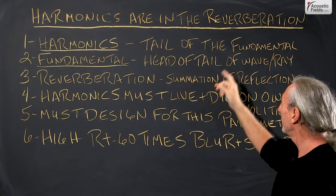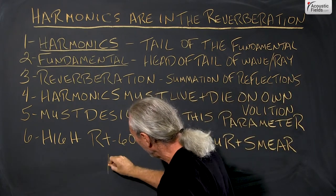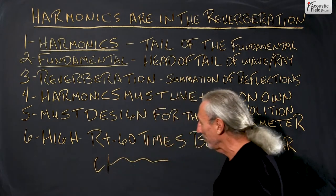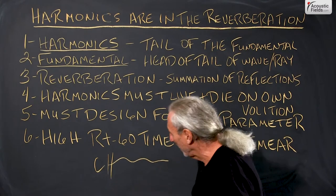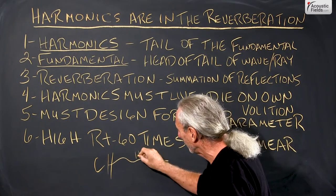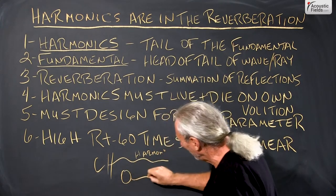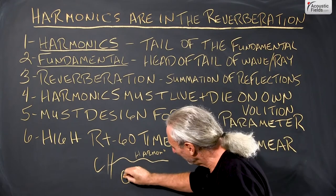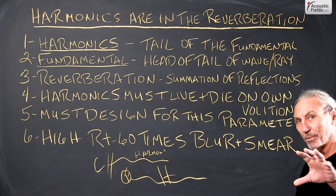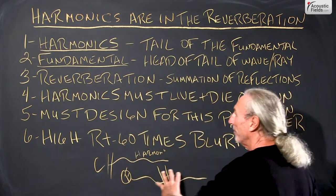So let's think of harmonics as the tail of a fundamental. If we have a start point, that harmonic is going to go — if we take middle C here on a piano, here's our fundamental and then we're going to have the harmonic structure of it, which is really the tail. So if we think of a tadpole, the fundamental is the head and the harmonic is in the tail. That's what we have to realize: there are two parts to sound and notes and everything.